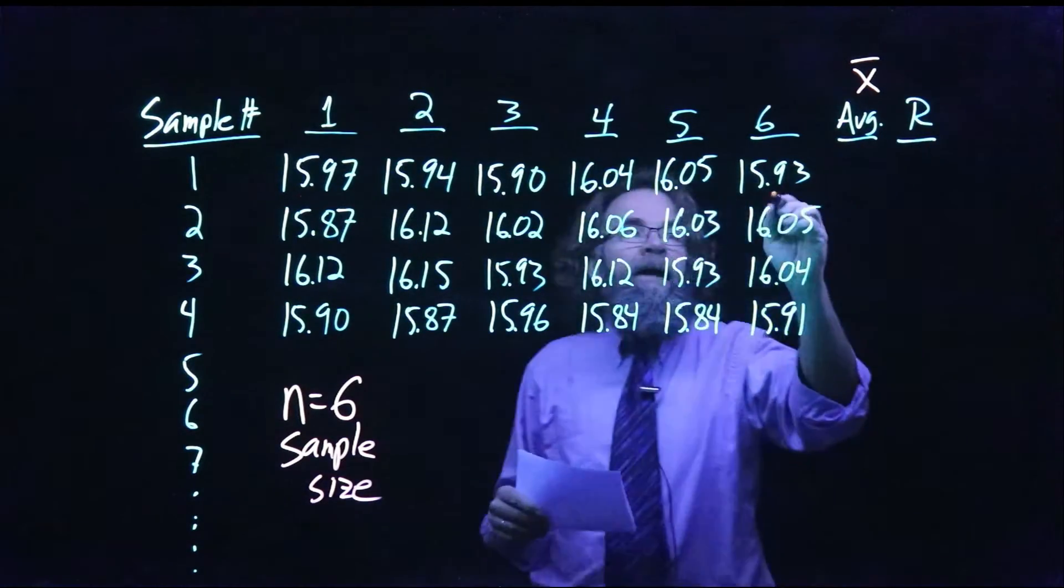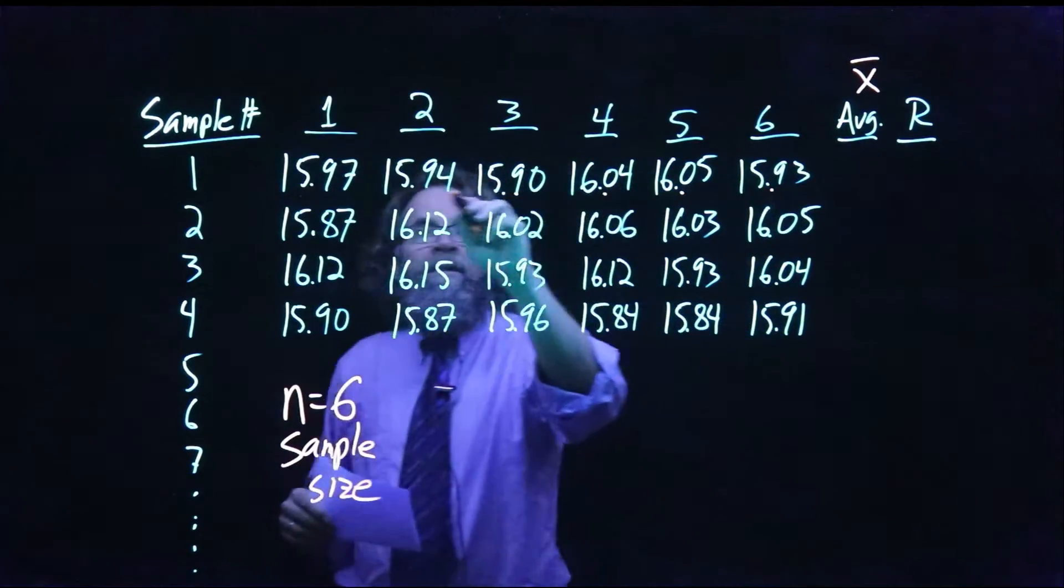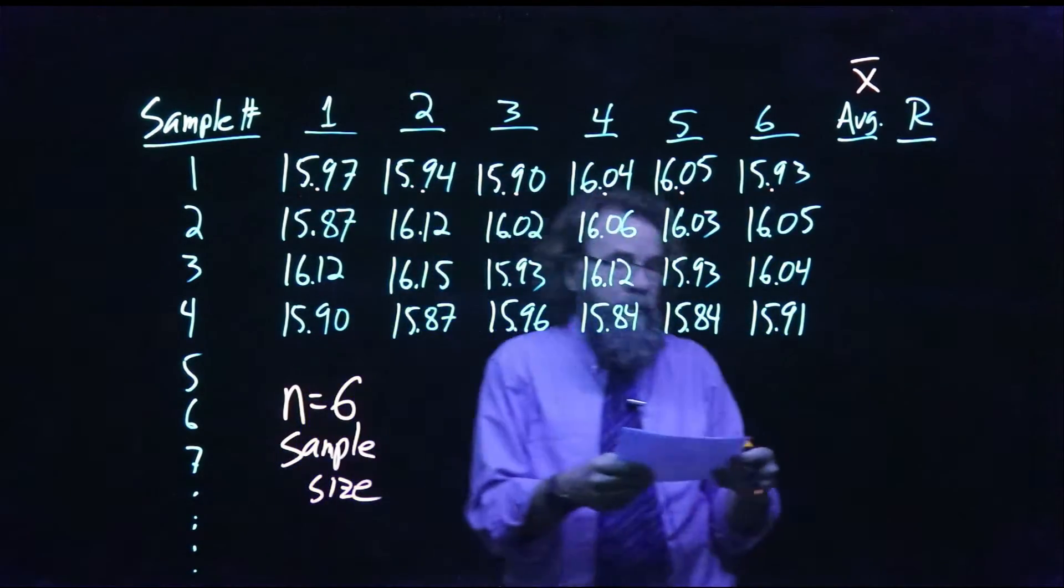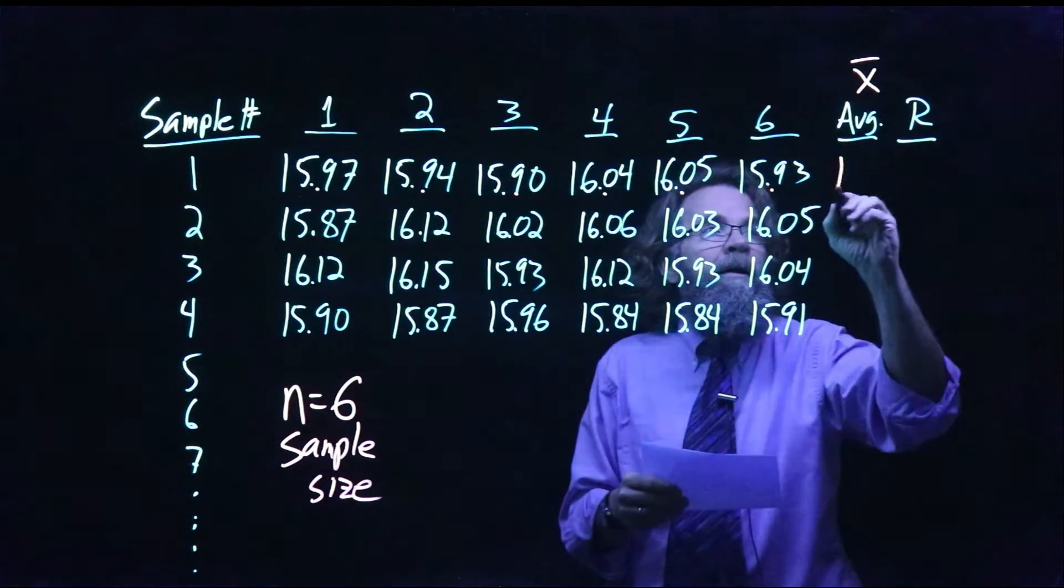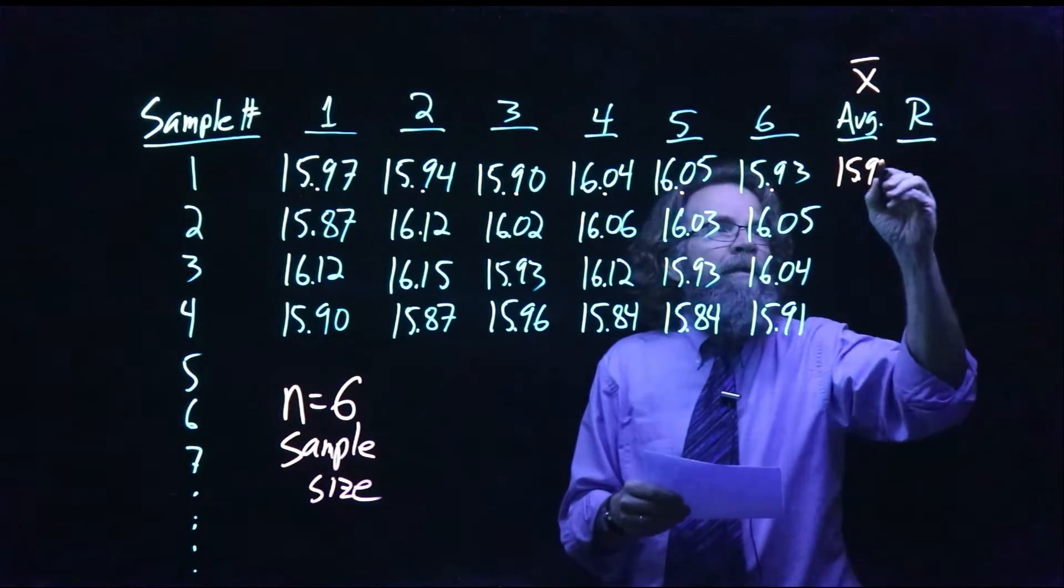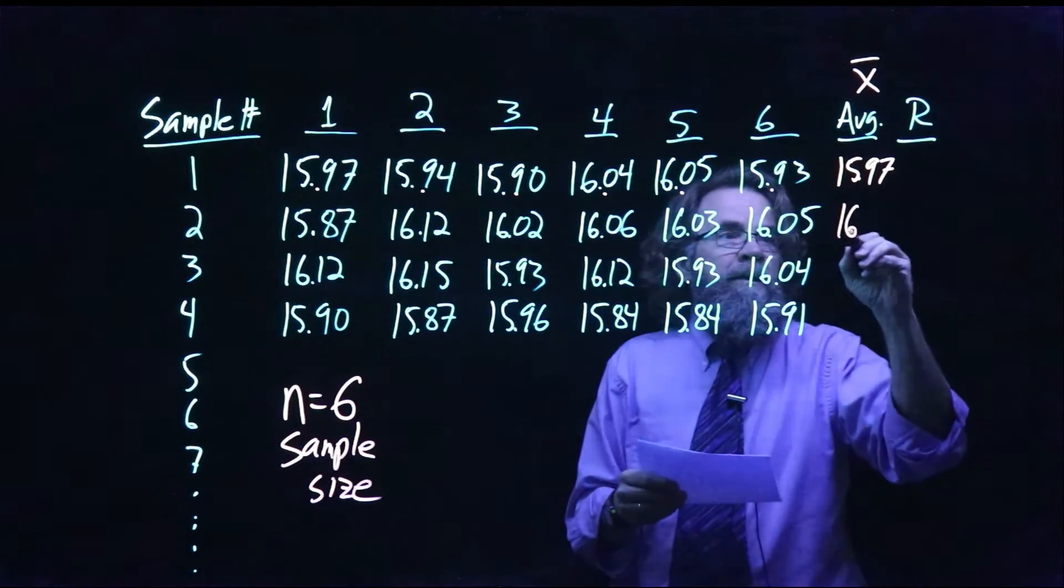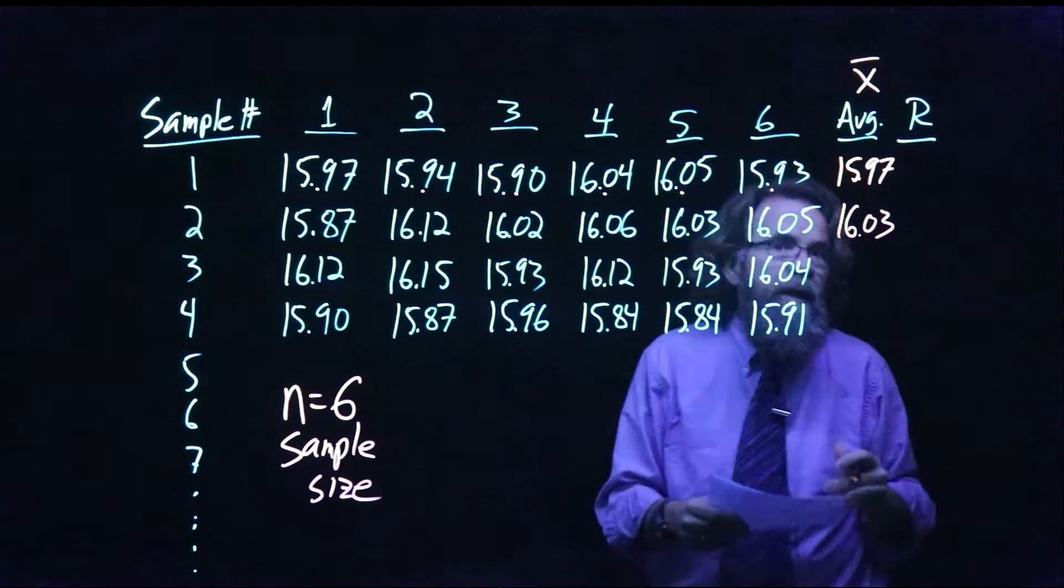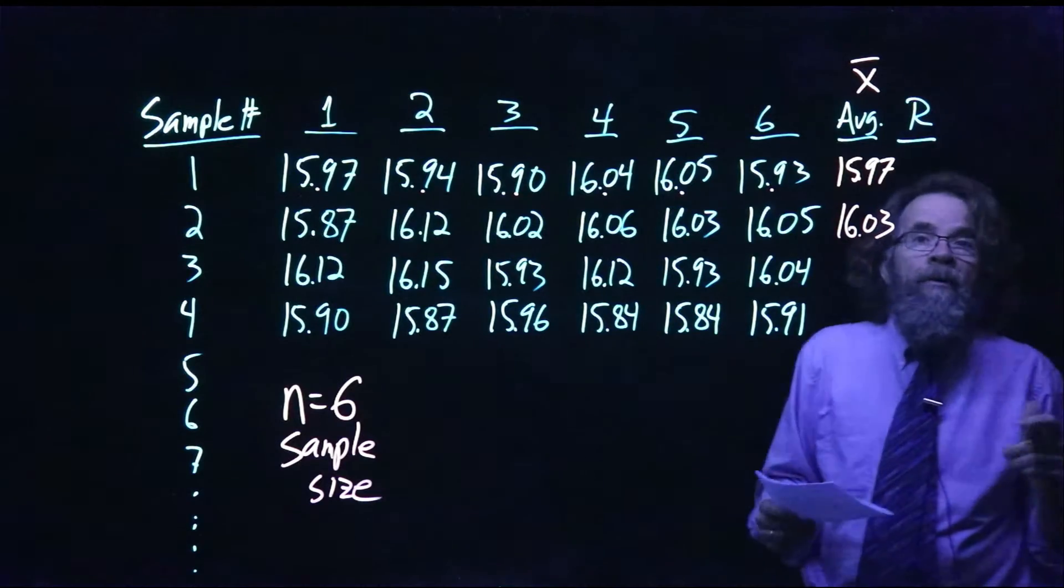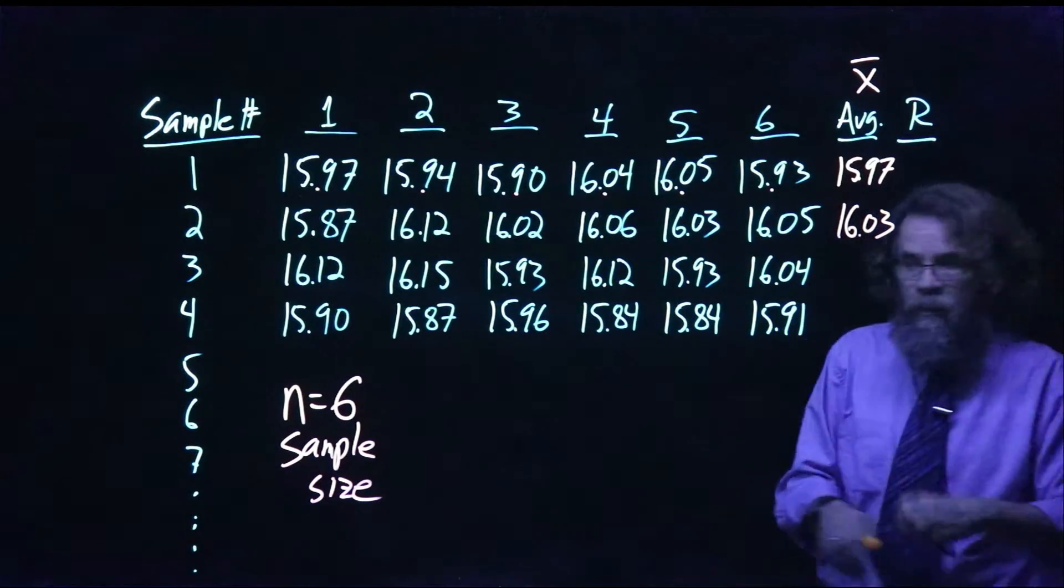Of course, I assume everyone knows how to take an average. You just add up these six numbers and take the average. And if you want to double check that, the average of these six numbers should be 15.97. The next row is 16.03.